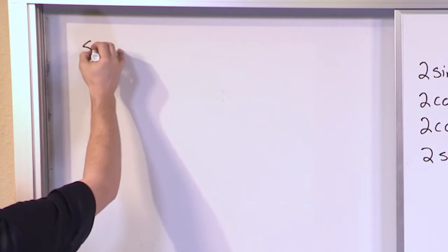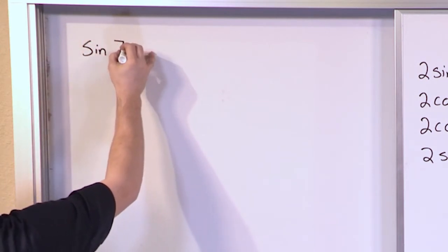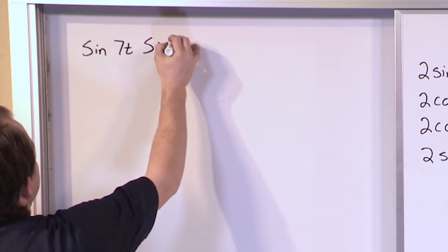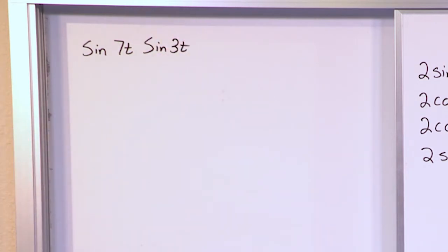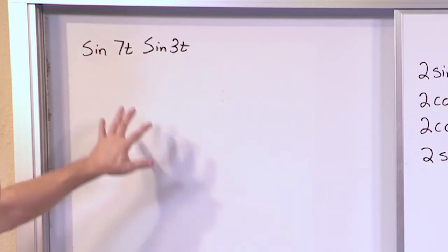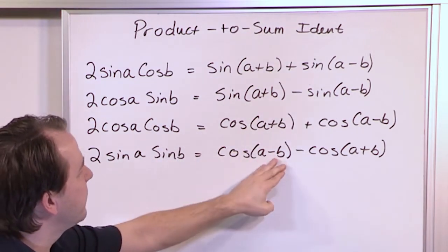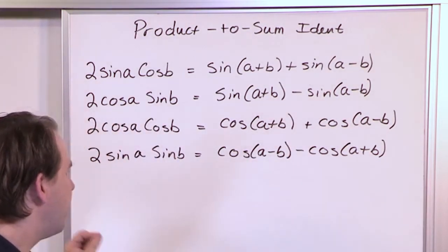All right, now if you have sine of 7t, where again, this is all just an angle in here, times the sine of 3t, how would you expand that into a sum? Well, we look for sine times sine, because that's what we have. It's cosine of the difference minus cosine of the sum of these angles.